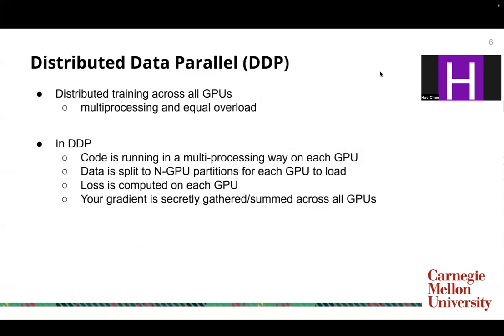Next, we'll go through distributed data parallel. Distributed data parallel is the true distributed training across all GPUs, which means it's multiprocessing and each process is equally loaded. In distributed data parallel, your code runs in a multiprocessing way on each GPU. Your data is split into n-GPU partitions for each GPU to load, your loss is also computed on each GPU, and your gradient is collectively gathered and summed across all the GPUs.